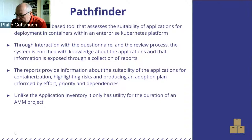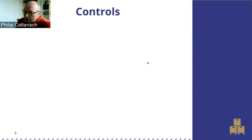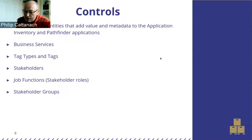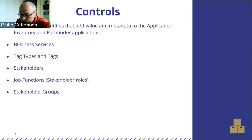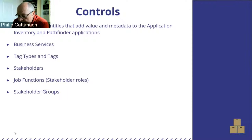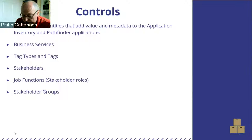The reports from Pathfinder provide information about the suitability of applications for containerization, highlight any risks, and produce things like an adoption plan informed by effort, priority, and dependencies. The controls are a collection of entities — business services, tag types, tags, stakeholders, job functions, and stakeholder groups — that add value and metadata to the applications. Stakeholders are the people with a vested interest in the successful migration or modernization of those applications.